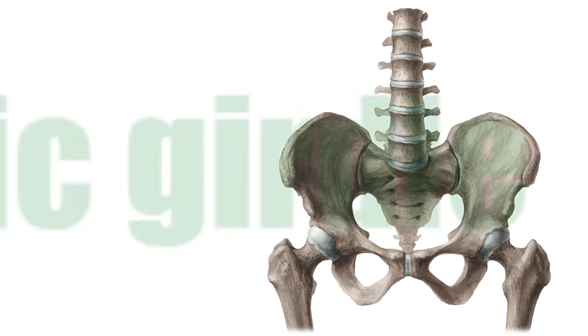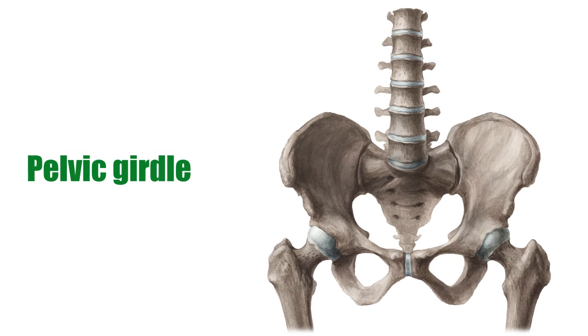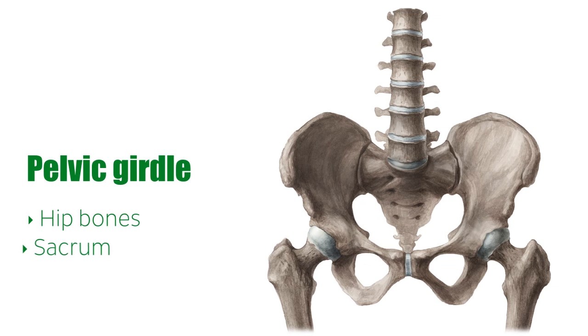The pelvic girdle consists of the hip bones and the sacrum, and its function is to transmit the weight from the upper body to the lower limbs, while allowing the body to stay balanced.